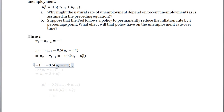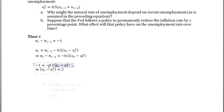Plugging in, negative one equals negative one-half times the unemployment gap. Solving: negative one divided by negative one-half equals two, so the current unemployment rate minus the natural rate equals two. Therefore, in order to achieve the policy goal of reducing inflation by one percentage point, the unemployment rate must be set equal to the natural rate of unemployment plus two.